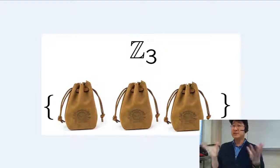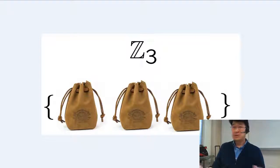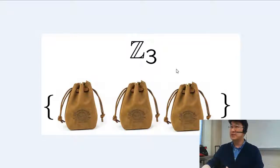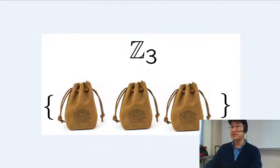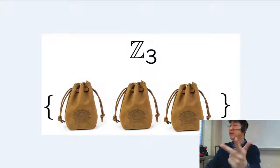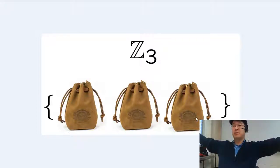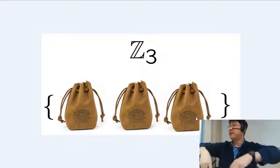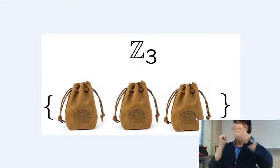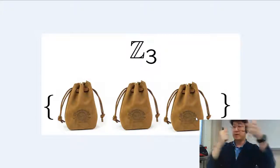Now recognize there's a set: Z mod 3 is a set of equivalence classes. So how many elements are in Z mod 3? Three elements. That's the leap you have to make. There are infinitely many numbers put into bags, but don't look inside the bags — just three bags. That's Z mod 3.